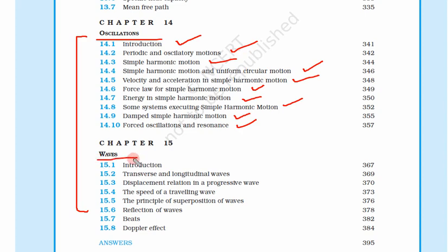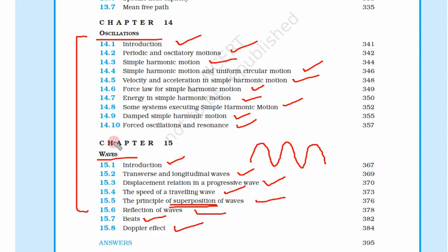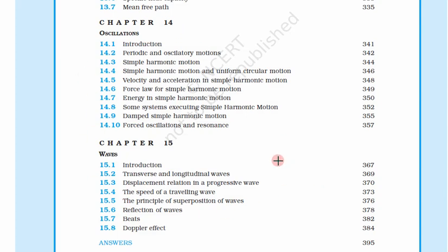Once we learn about oscillations, we learn that continuous oscillations make waves. Chapter 15 covers transverse and longitudinal waves — by now you may have learned that sound waves are longitudinal and light waves are transverse. Topics include displacement in a progressive wave, speed of a traveling wave, principle of superposition of waves, reflection of waves, beats, and the Doppler effect. These two chapters are quite different and need a lot of attention.